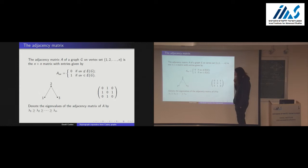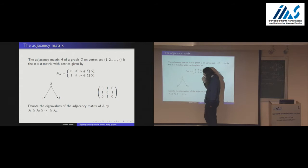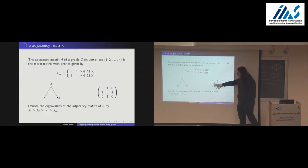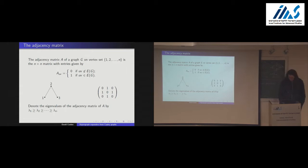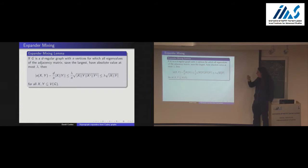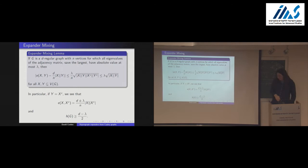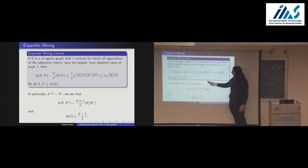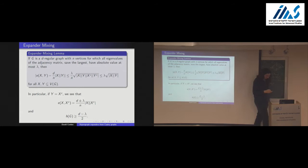When I talk about spectrum, I'm talking about the adjacency matrix. The largest eigenvalue is just the degree, and the smallest one, if it's bipartite, is minus the degree. Everything else in between should hopefully be smaller if you're an expander graph. One of the main results is that if all eigenvalues of the adjacency matrix except the largest are smaller than lambda, then between any two sets X and Y the number of edges is close to what it is in a random graph, up to some small factor.